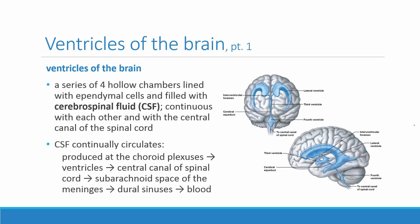The ventricles of the brain are a series of four hollow chambers lined with ependymal cells — one of the neuroglial cell types. These ependymal cells are responsible for drawing fluid from the blood and using it to form cerebrospinal fluid. There are four of these hollow chambers associated with the brain.